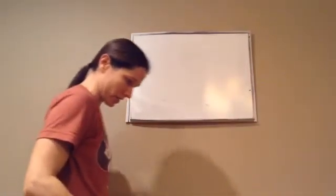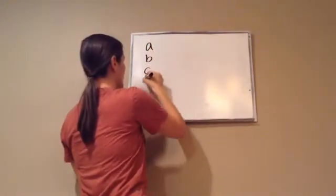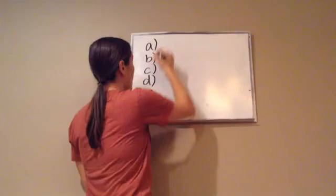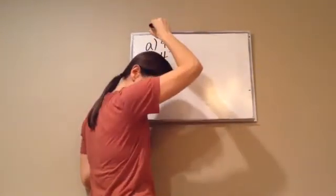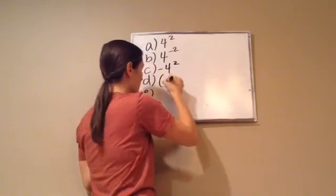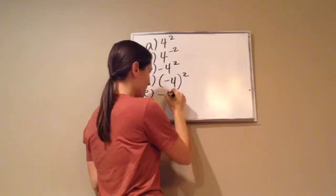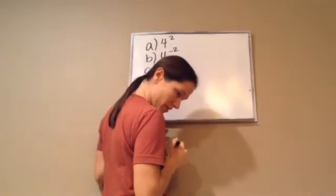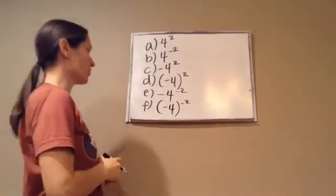Now we're moving to the second part of that lesson, which is minus signs and negative exponents. We're going to be doing six problems: A, B, C, D, E, and F. 4 squared, 4 negative squared, negative 4 squared, negative 4 squared with parentheses, negative 4 negative squared, and negative 4 negative squared.